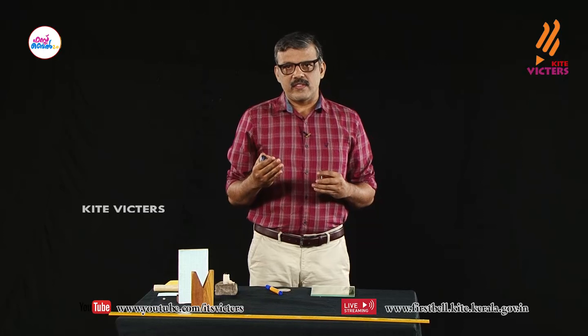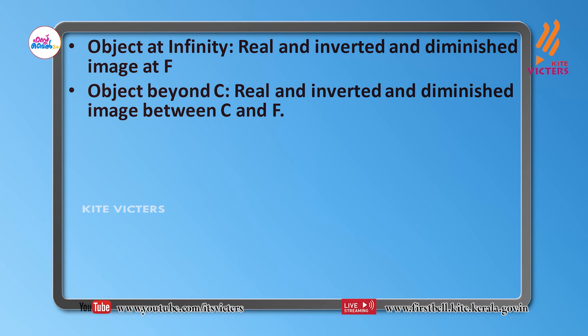In the second case, when the object is placed beyond C, we get a real, inverted, and small image in between F and C.